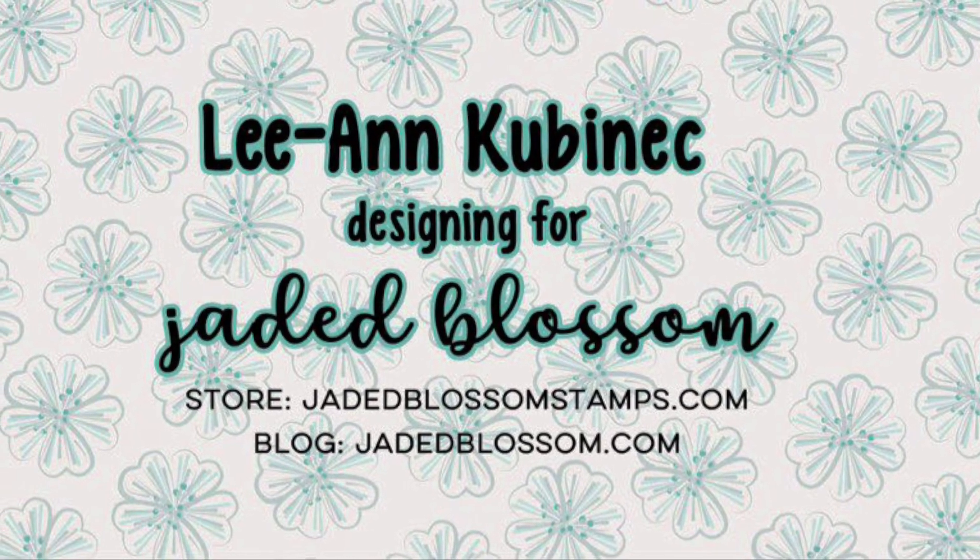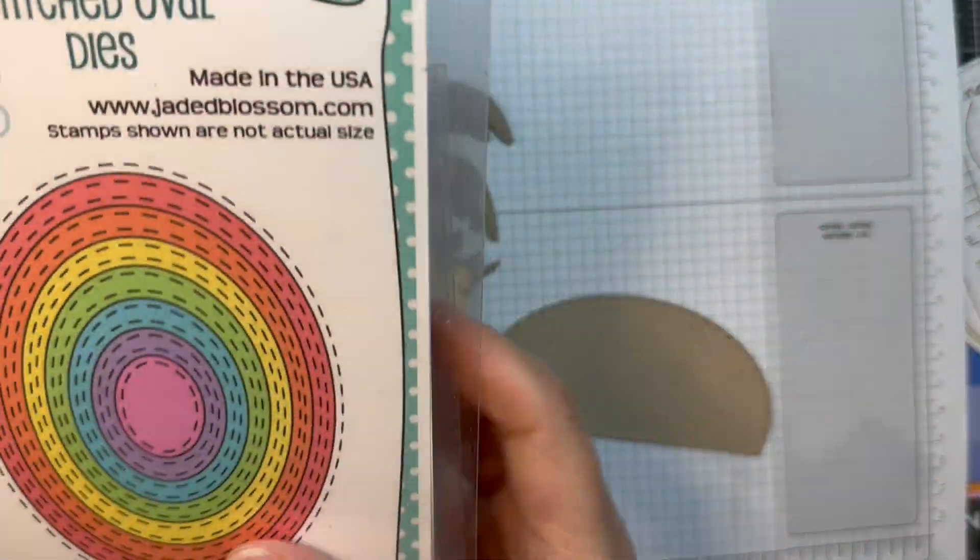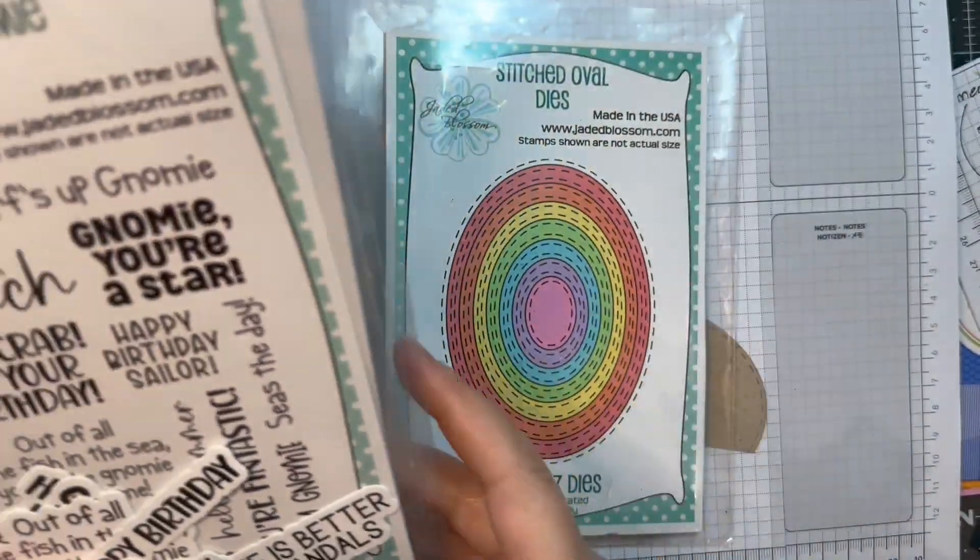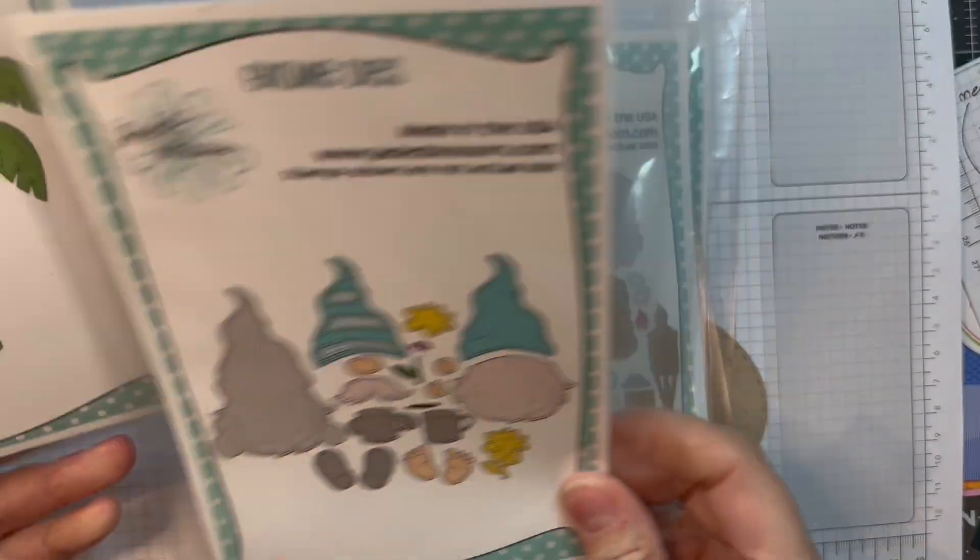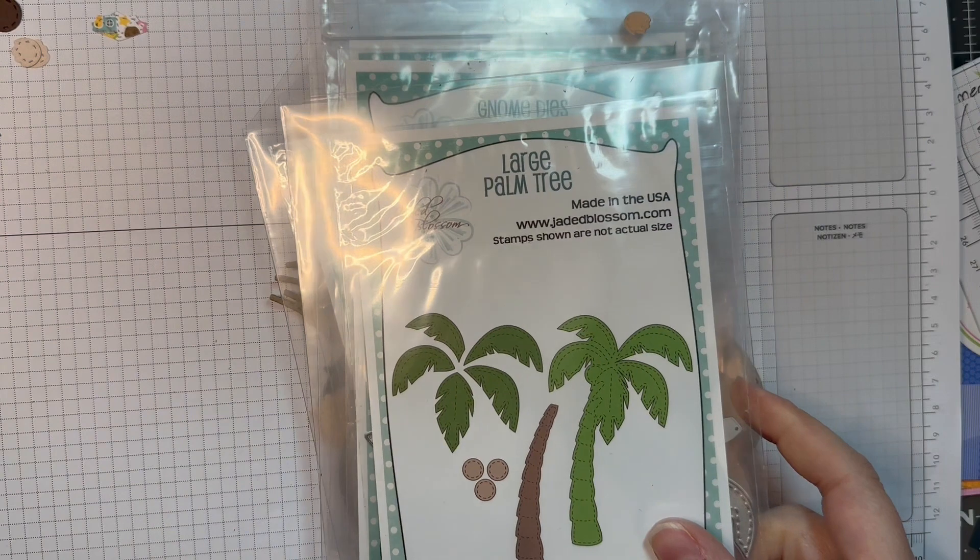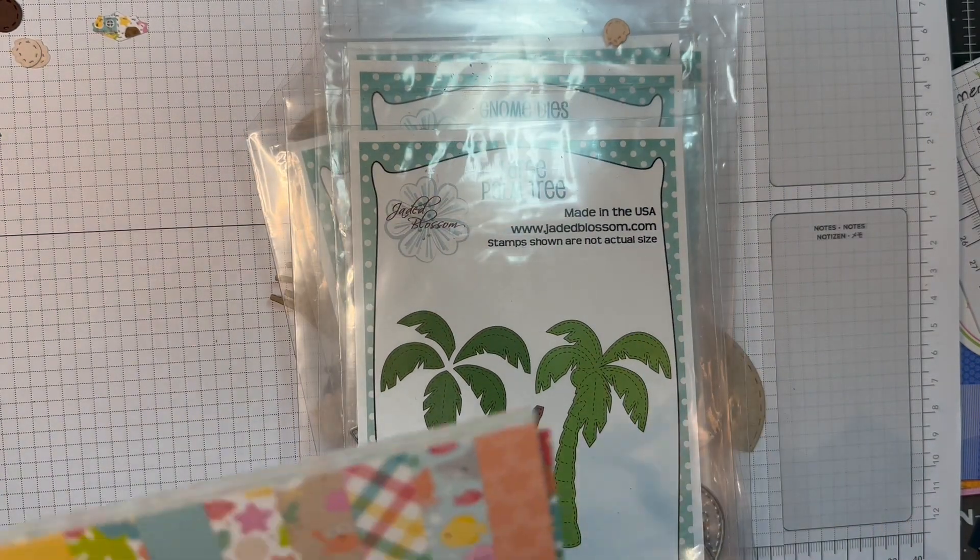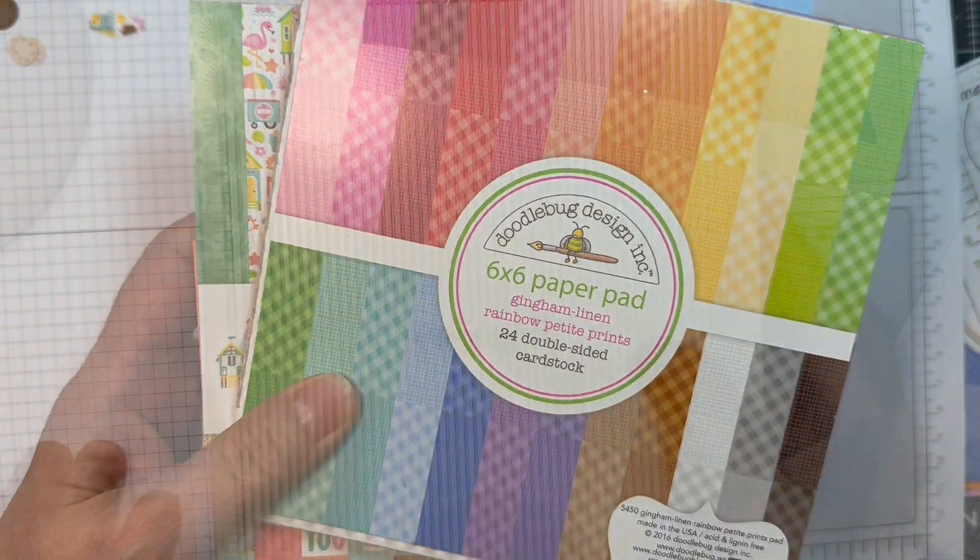Hi everyone, Leanne here from Jada Blossom and it's time for our July 2023 release. I have another project to share. I'm using Jada Blossom's Stitched Oval Dies, their Ahoy Gnomey Stamp Set and Outline Dies, the Gnome Dies Tiki Add-ons, the Gnome Dies and the Large Palm Tree Die. I'll be using Doodlebug's Seaside Summer 6-inch Pad along with their Gingham Linen.